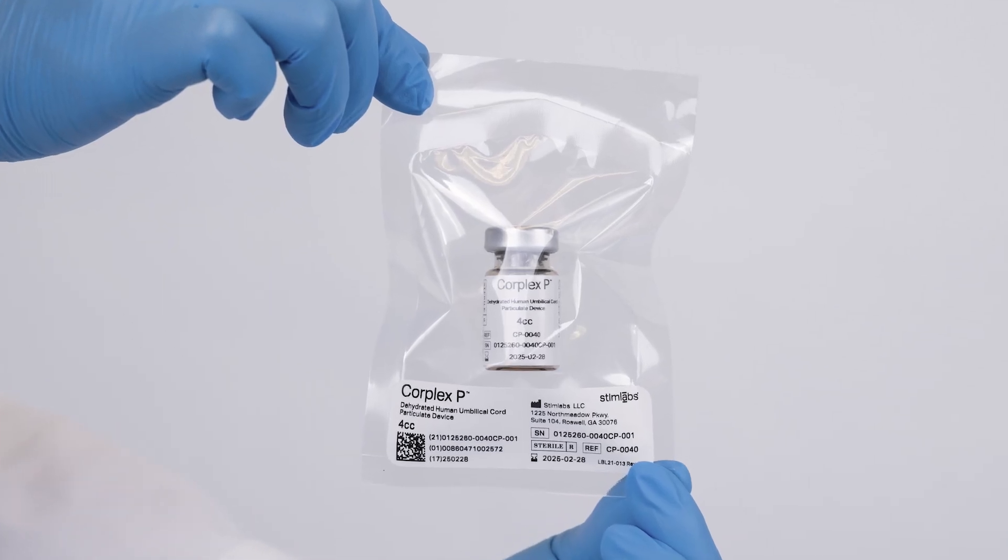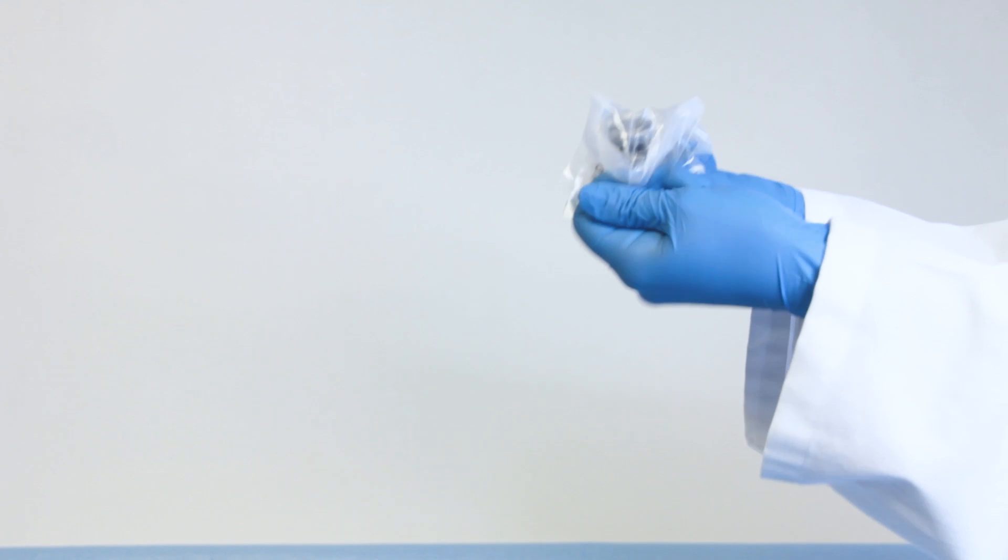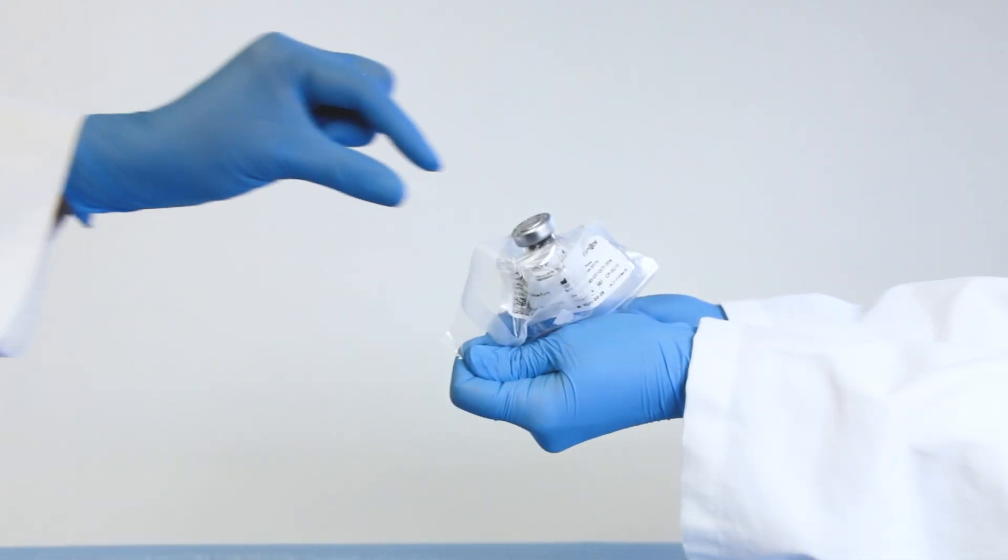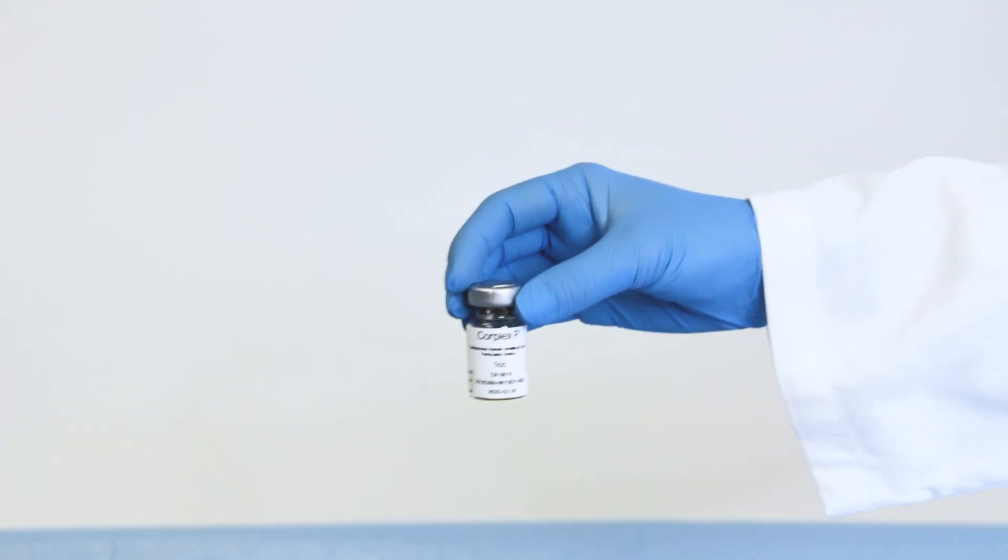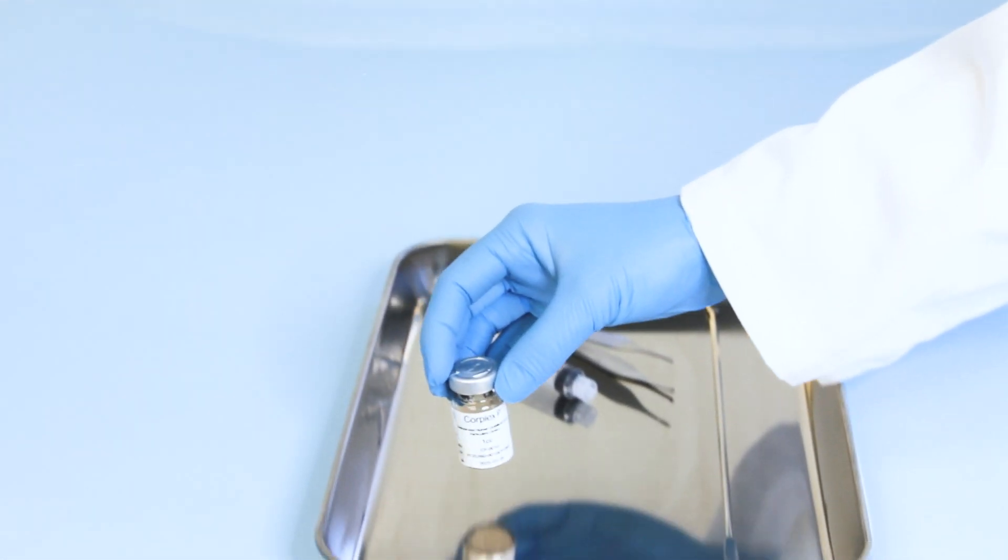Preparing the device. Peel open the pouch using the chevron opening and remove the sterile CorPlex-P vial using aseptic technique. Once the pouch seal has been compromised, the device shall either be transplanted, if appropriate, or otherwise discarded.